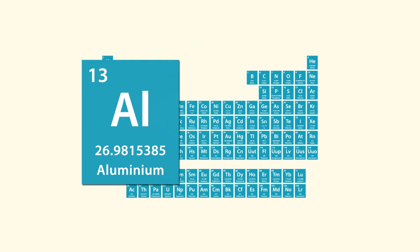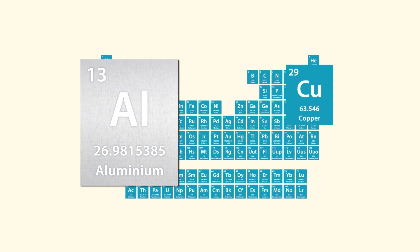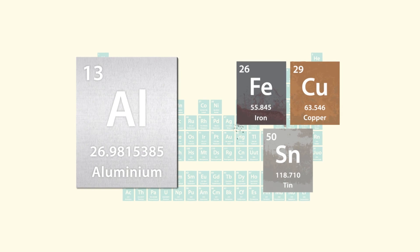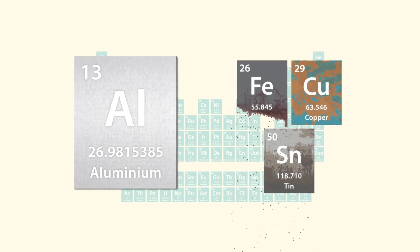Aluminum, when left out in the elements, will oxidize like iron or steel. But unlike these other metals, aluminum's oxide layer will not rust or eat away at the substrate.